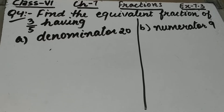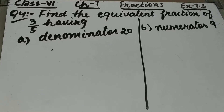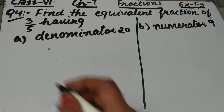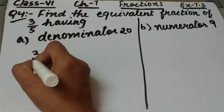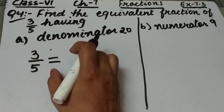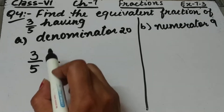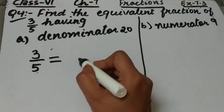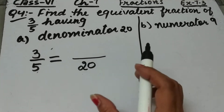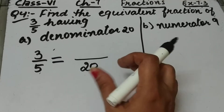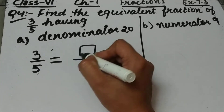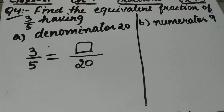Let's start question number 4. The question is: find the equivalent fraction of 3 by 5 having denominator 20. We have to find the equivalent fraction of 3 by 5 — that means we will put an equal to sign. The denominator should be 20, so we have to find the numerator.